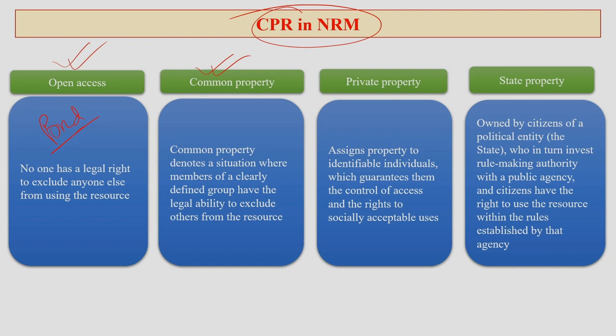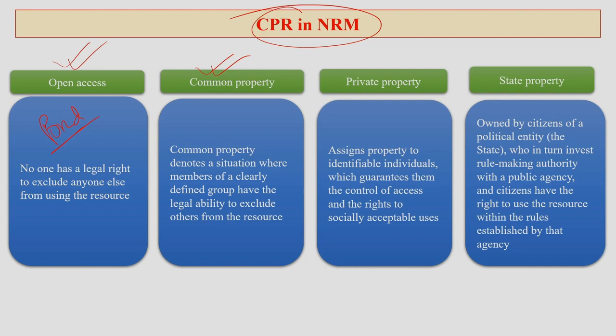This is the difference between open access and access with permission. Common property denotes a situation where members of a clearly defined group have the legal ability to exclude others from using that particular resource. Even though it is a common property, it is common to a specific community. This kind of case often occurs in areas dominated by local inhabitants or tribal communities, who have rights to certain natural resources and can stop others through legal documents or legal cases.